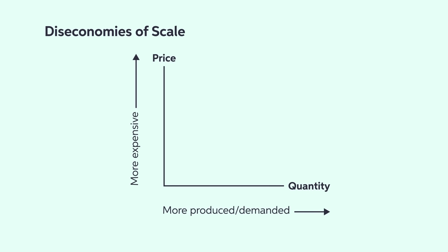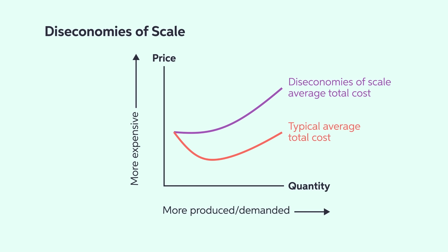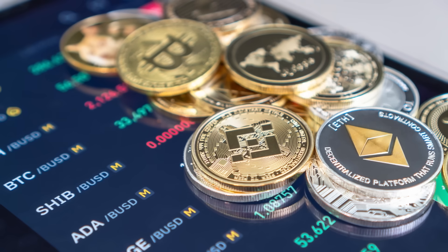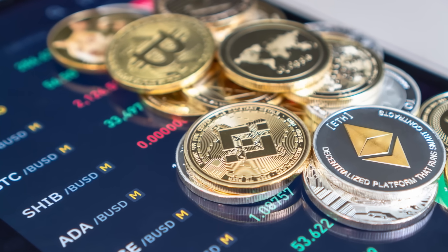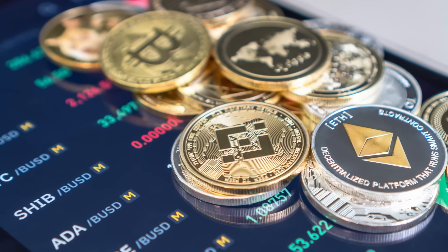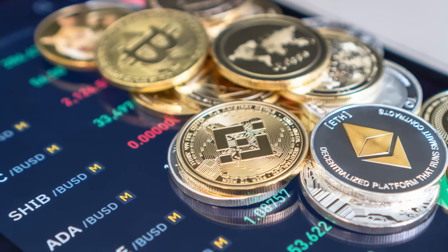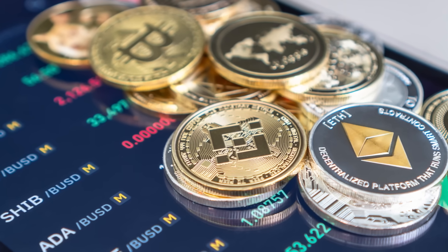Diseconomies of scale are the opposite. As the quantity produced increases, so does the average total costs. Diseconomies of scale puts firms in a difficult situation because that means the prices they have to pass on to consumers have to increase faster than the price of production of a particular good, or else the firm will exit over a long period of time. A real-life example of diseconomies of scale can be seen in the cryptocurrency space, where for some cryptocurrencies it takes more and more computing power to make an additional coin than it does for the prior coins being produced.